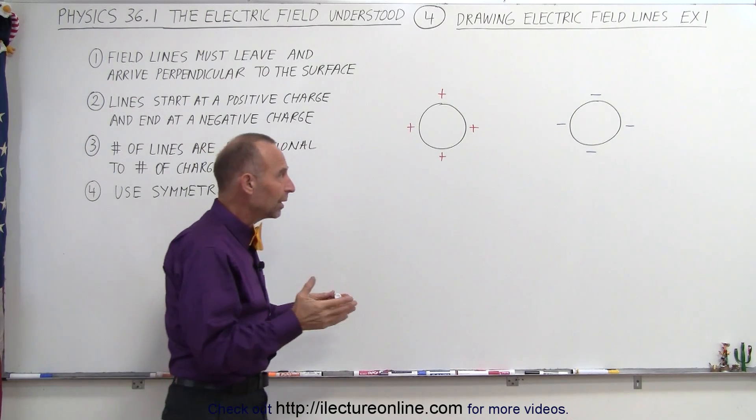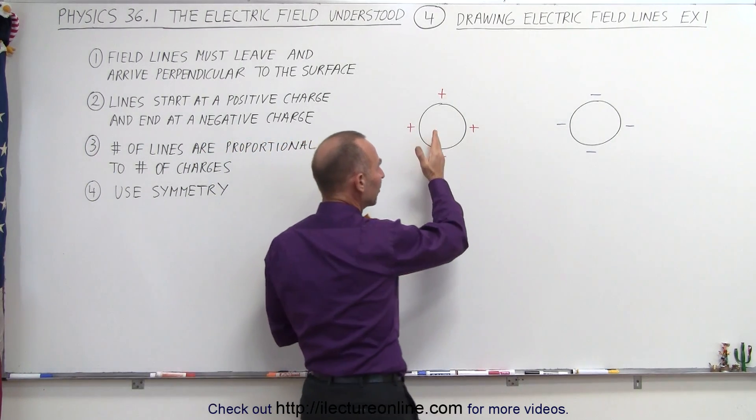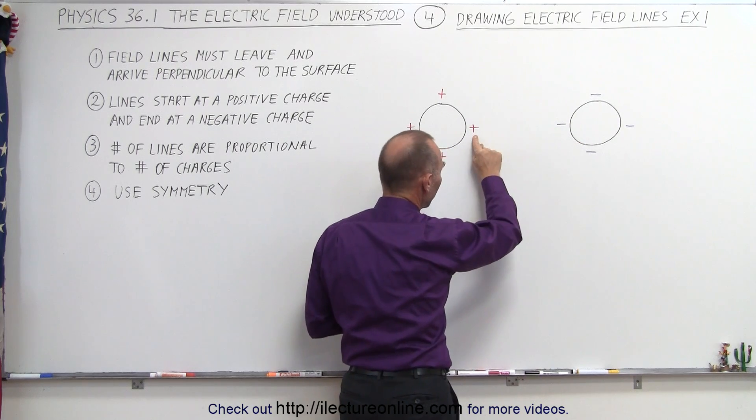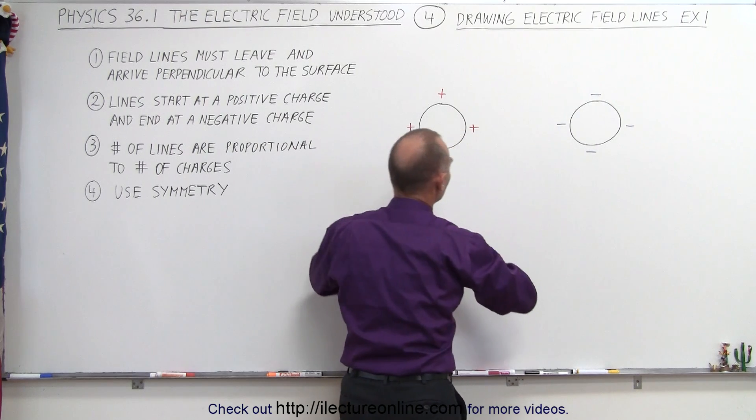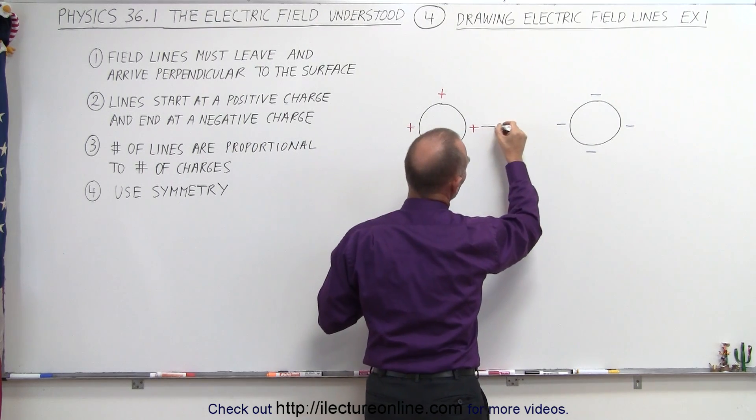So what we're going to do is realize, since all the lines go from positive charges to negative charges, we'll pick a positive charge, the one that's closest to the negative charge, and then we can draw a line straight across. So this will be our first line, straight across.